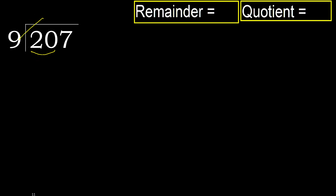9 multiplied by which number is nearest to 20 but not greater? 9 multiplied by 3 is 27, which is greater. Multiplied by 2 is 18. 18 is not greater, so subtract. Next.